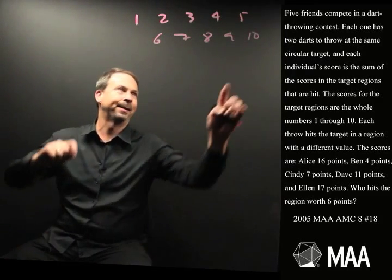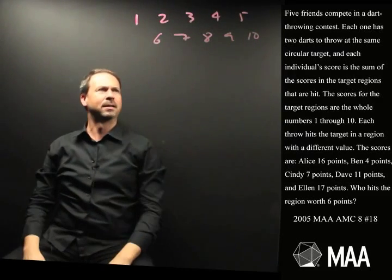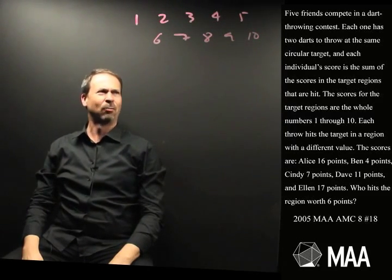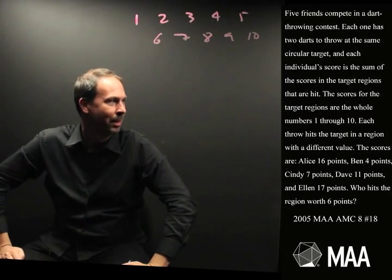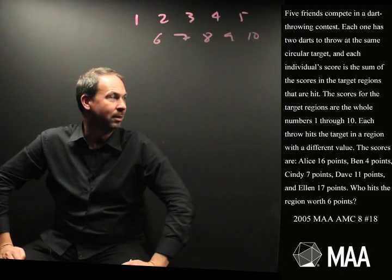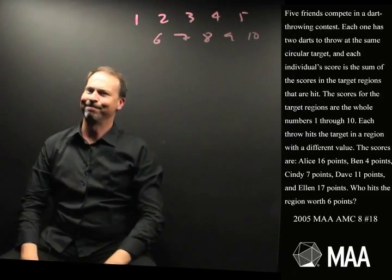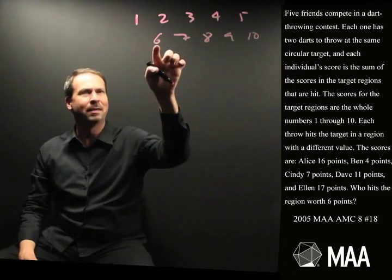Hang on. Alice got 16, so maybe she had like 10 and 6, or, hmm, 10 and 6 I guess. Did she hit it? Is that right? Oh, it could be 9 or 7. Oh well. Don't know. Ben got 4 points, so maybe he got like 1 and 3 or something. Cindy got 7 points. Seems like there's no way I could possibly know who hit the 6 point region, who hit the number 6.